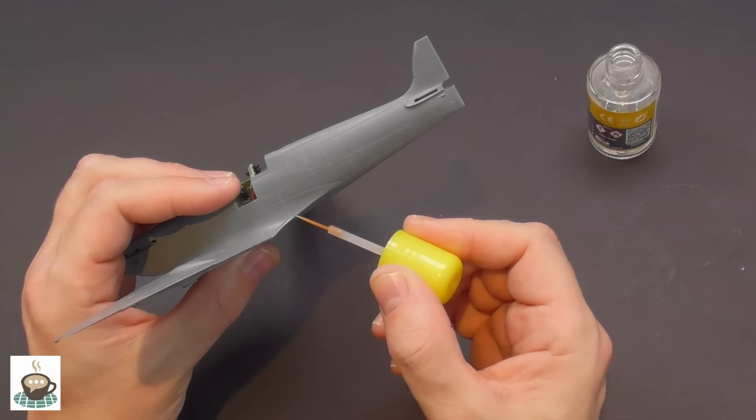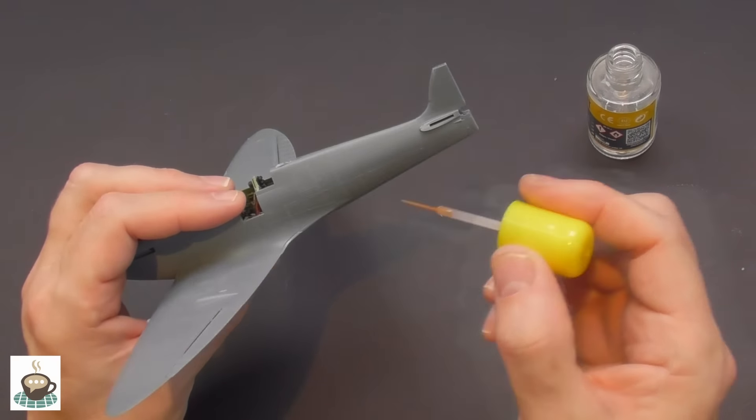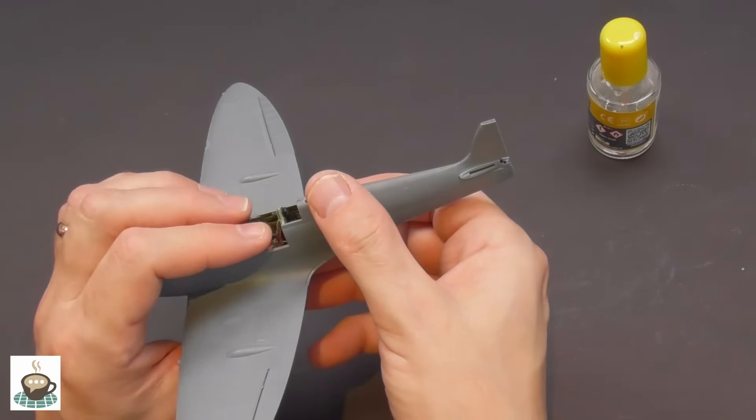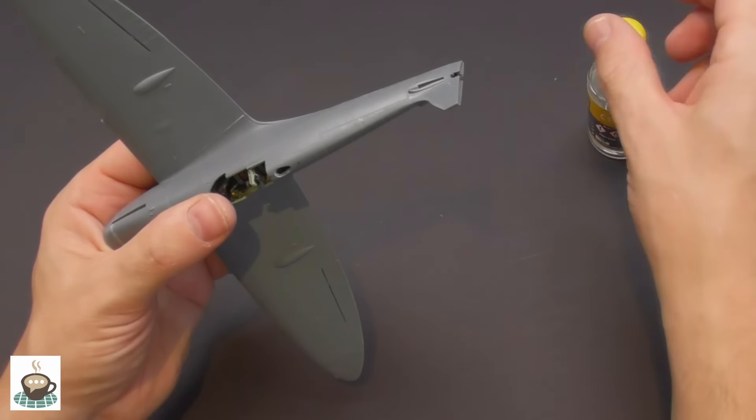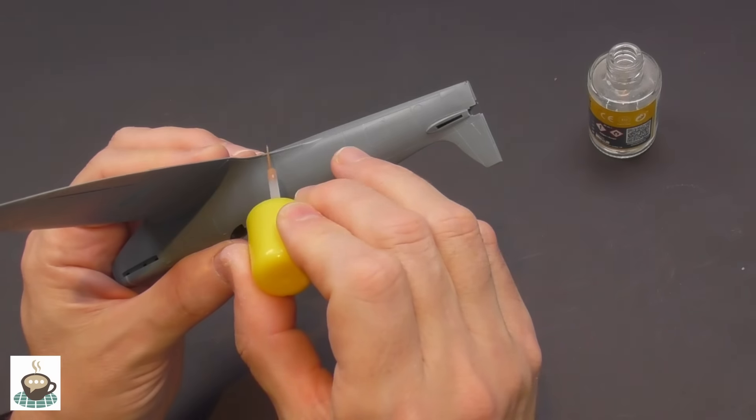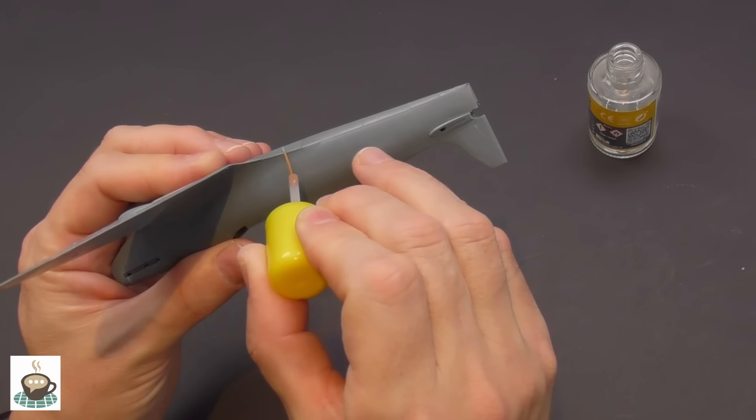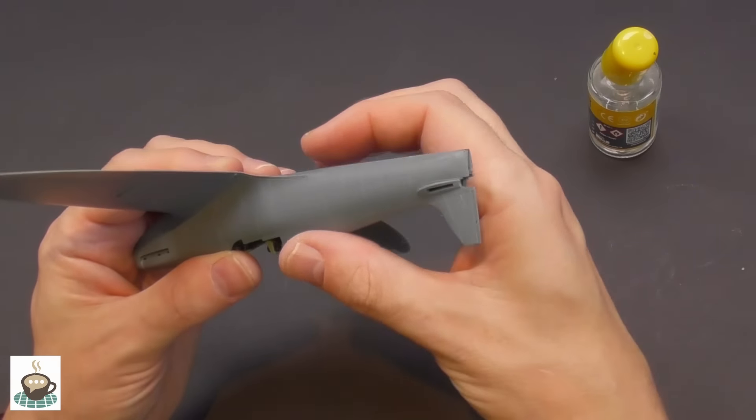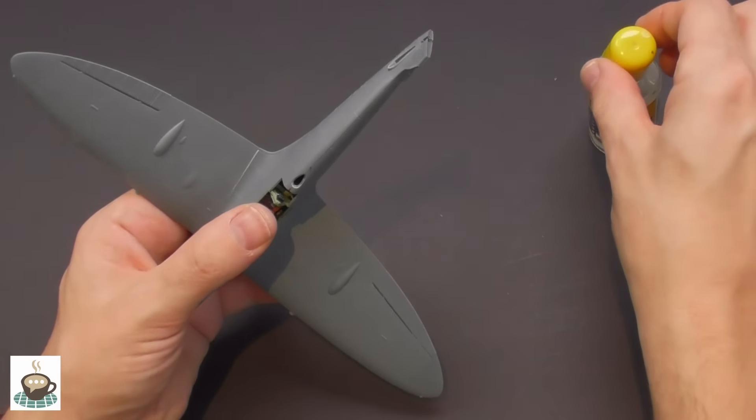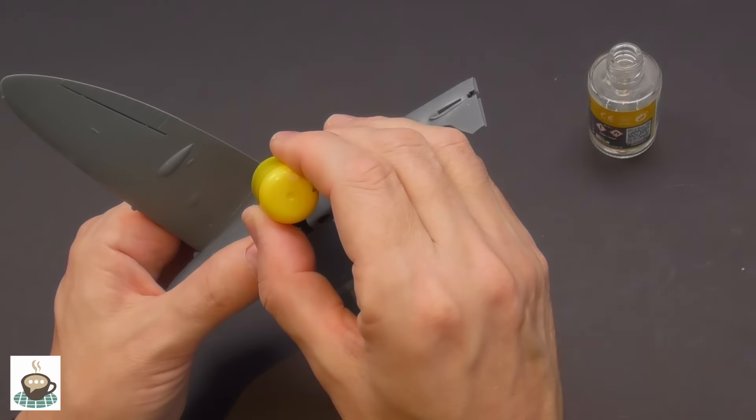Again, this is the advantage of this applicator brush. It's so, so precise, really like it. You can be really accurate with it, you don't need to flood the join. You can just put the glue exactly where it's needed. Then just a little bit of pressure and that will set up nicely.